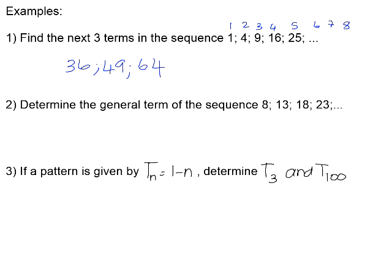Number 2: determine the general term of the sequence 8, 13, 18, 23. First, let's find the common difference: 8 + 5 = 13, 13 + 5 = 18, 18 + 5 = 23. So I need multiples of 5. Looking at position numbers: 5 × 1 = 5, which is not 8 — we need to add 3 to get 8. Checking position 2: 2 × 5 = 10, plus 3 is 13. So the general term is T(N) = 5N + 3.